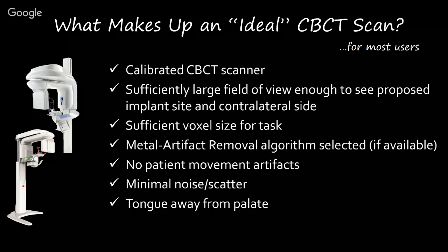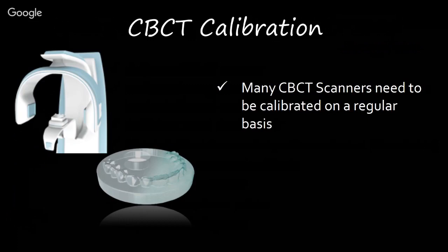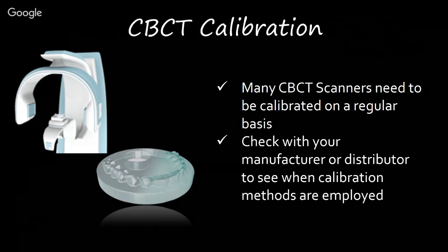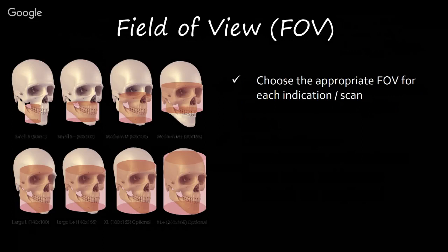Nearly 100% of my cone beam scans are made with an open bite. The tongue should be away from the palate — our assistants are trained from dental assisting school to tell patients to put their tongue on the roof of their mouth during a panoramic scan, but that's not what we want for cone beam. We'll cover each of these recommendations in detail, including calibration, which is manufacturer-specific.